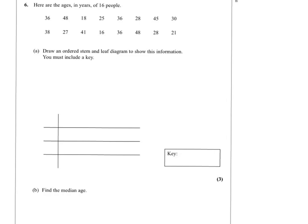Question 6. We have to draw a stem and leaf diagram for this set of data which represents 16 people. The minimum value is 16 and the maximum value is 48.